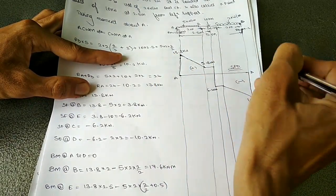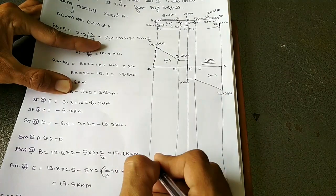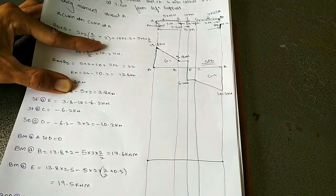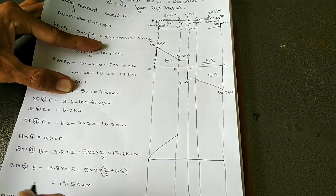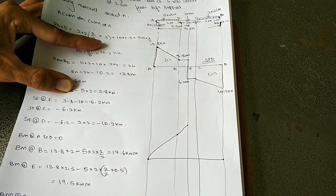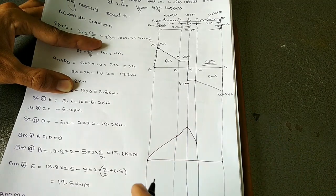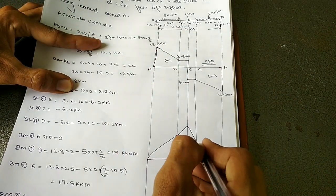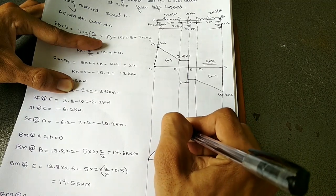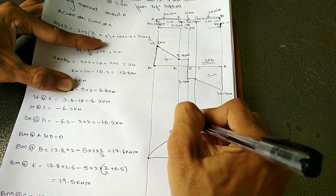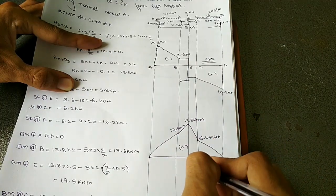Next, let us draw the bending moment diagram. Bending moment at A and D are 0. At B it is 17.6 kNm — mark a point and join with a parabolic arc from A. At point E it is 19.5 kNm — greater than B; join with a straight line. At point C it is 16.4 kNm; join with a straight line. From C to D, join with a parabolic arc back to 0. All values are positive. This completes your bending moment diagram.